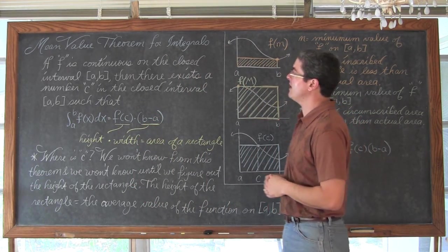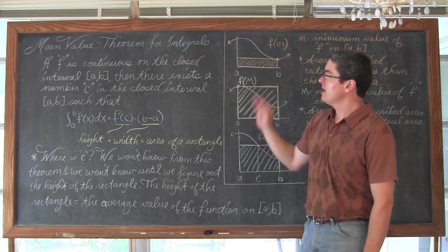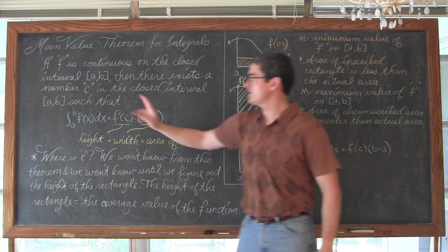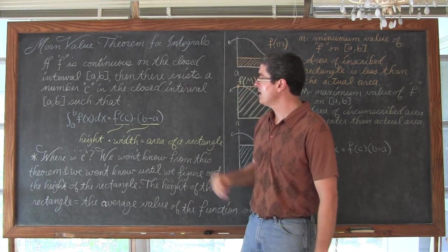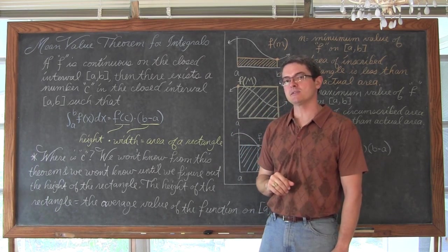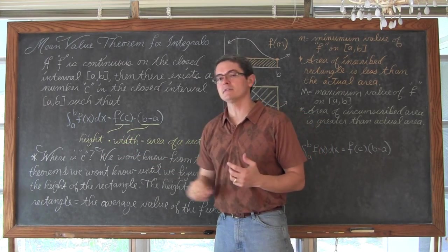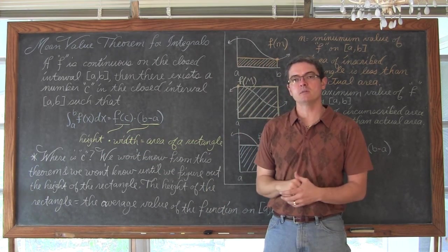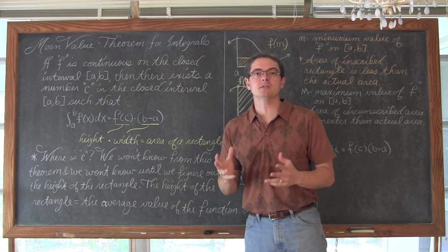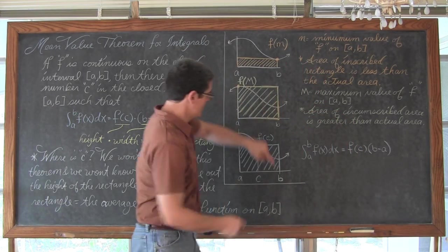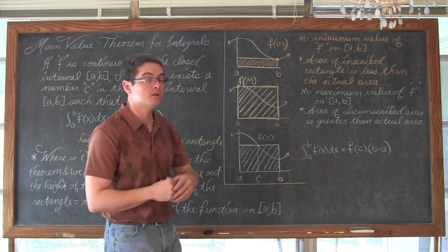So here we have the first theorem, the mean value theorem for integrals. If function f is continuous on a closed interval ab, then there exists a number c in the closed interval ab such that the definite integral of f dx with a lower bound of a and an upper bound of b is equal to f of c times b minus a. Well that c value that we plug in and get a y value out of the function is going to be the height of our rectangle. And then b minus a is of course going to be the width along the x or y axis. Now this theorem just simply guarantees that there is a value of c such that that height times width, that area of that rectangle is going to be equal to the area bound by the function and an axis on a closed interval.